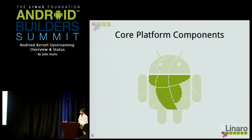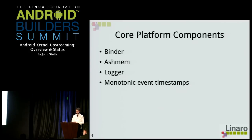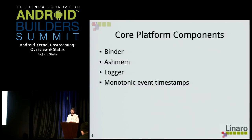The core platform components are those absolutely necessary for the Android platform to function — without them the Android environment will not run or you won't be able to interact with it. First is Binder, the IPC layer that's core to Android. Since all applications run as different users, if they want to communicate between applications they use Binder. It's the framework upon which larger Android concepts like intents and content providers are built. We also have Ashmem, the anonymous shared memory system, which provides applications file descriptors to map in anonymous memory. Those descriptors can be passed through Binder to other applications to share that memory.